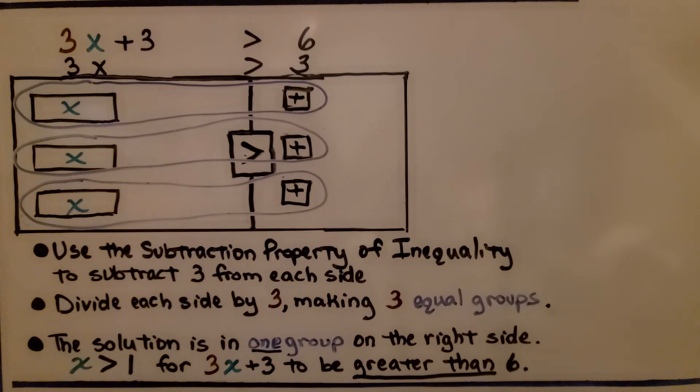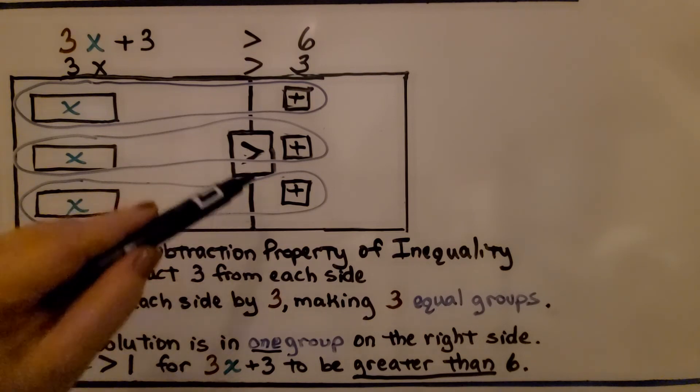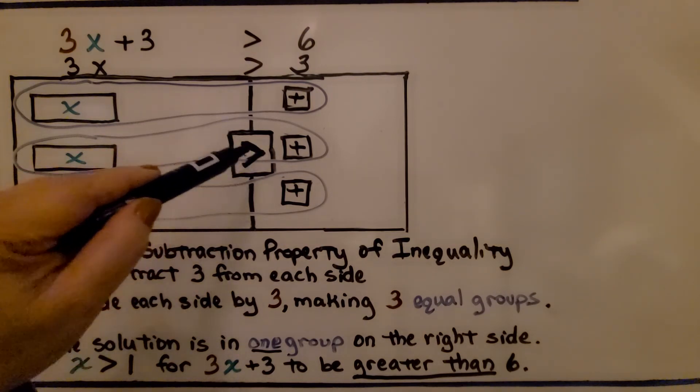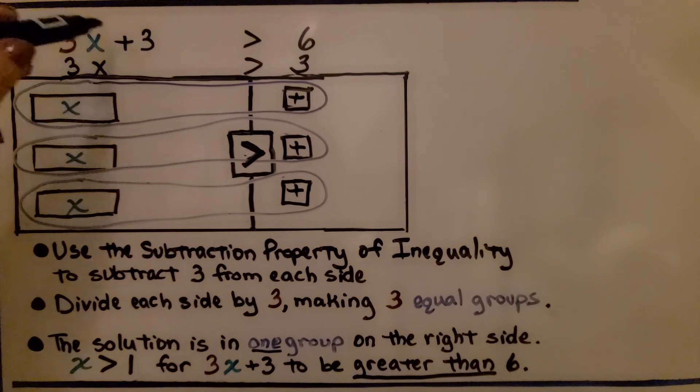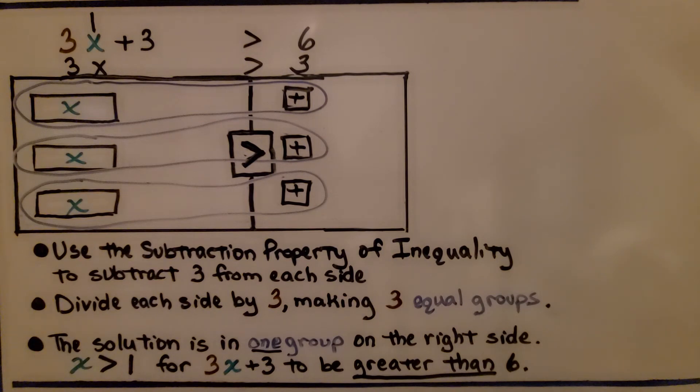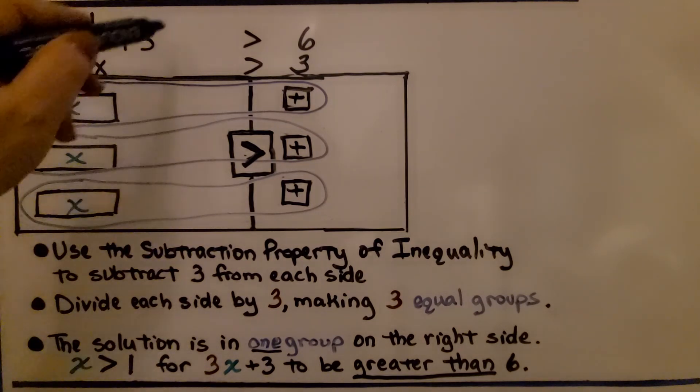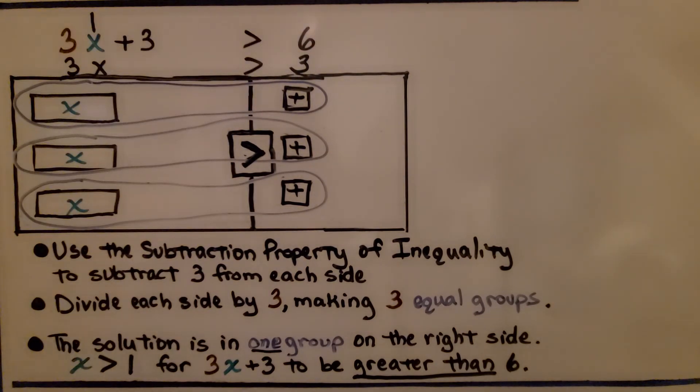The solution is in one group on the right side. We know that x is greater than 1 for 3x plus 3 to be greater than 6. If we have 3 times 1, that's 3, plus 3 more is 6, well it can't be 1. If this is a 1, it'll be equal to 6. So x has got to be greater than 1 in order for the left side to be greater than the right side. Our solution is x is greater than 1.